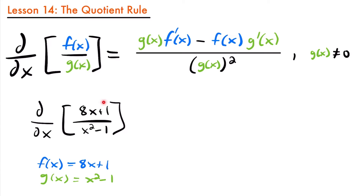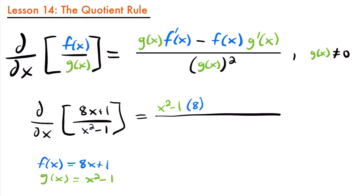So those are our two functions — we have our numerator f of x and our denominator g of x, which lines up with our notation. Taking the derivative, we have the denominator function g of x times the derivative of the numerator. We'll have x squared minus 1 multiplied by the derivative of 8x plus 1, which is just 8, because the derivative of 8x is 8 and the derivative of 1 is 0.